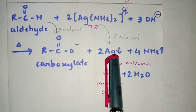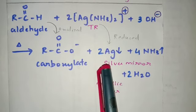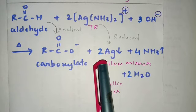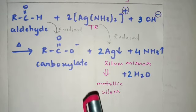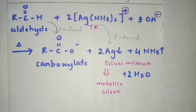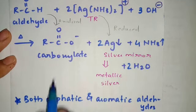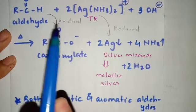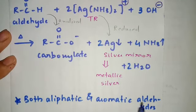This Ag that is precipitating is nothing but metallic silver. It is known as the silver mirror because it is precipitated in the test tube and if you look at it, it will kind of look like a mirror. This Tollen's test is shown by both aliphatic as well as aromatic aldehydes.